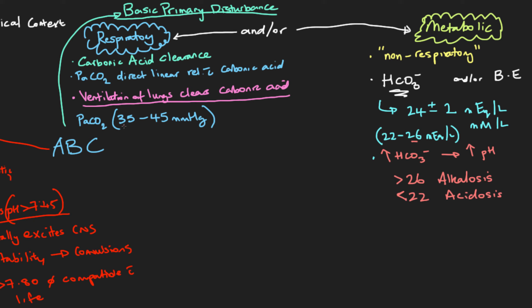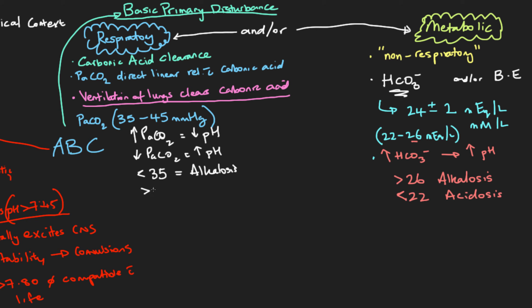Regarding PaCO2 and pH: increasing PaCO2 means more carbon dioxide dissolving into the blood as carbonic acid, which decreases pH — making the blood more acidic. Decreasing PaCO2 leads to a more alkaline pH. So PaCO2 less than 35 mmHg corresponds to alkalosis, and PaCO2 greater than 45 mmHg corresponds to acidosis.